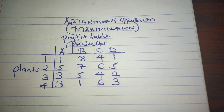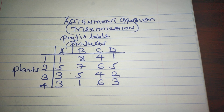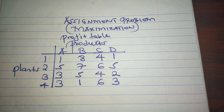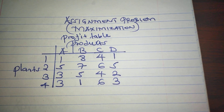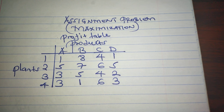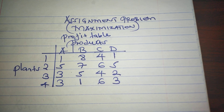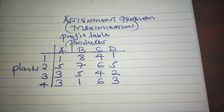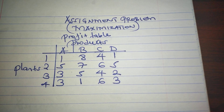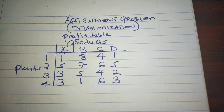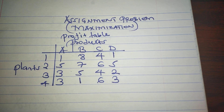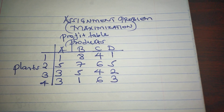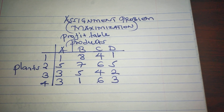So in the question at hand, we have a company which has four plants — one, two, three, and four — each of which can manufacture any of the four products. Given the profit table, how can we assign the plants to products for maximum profit using the Hungarian method?